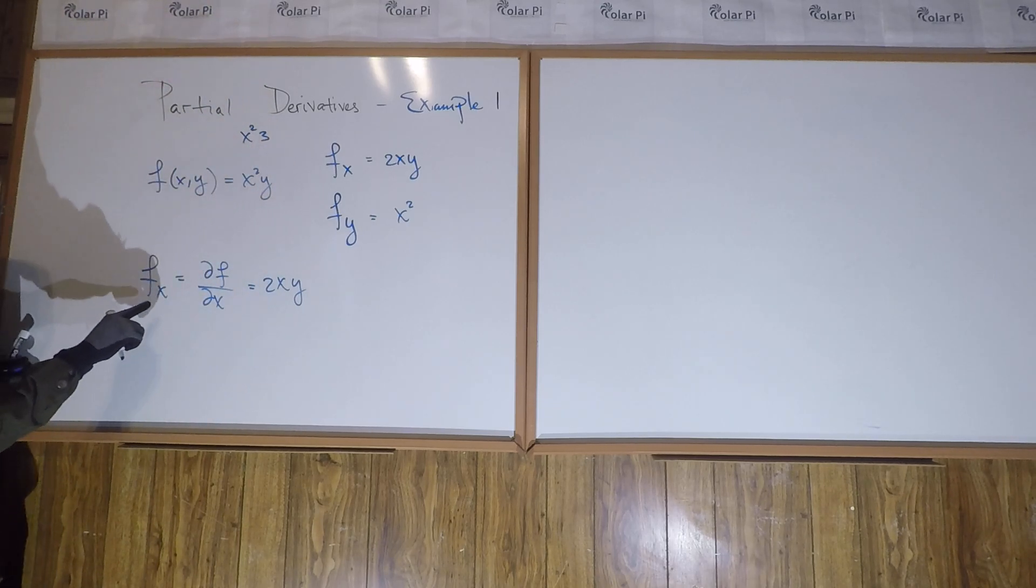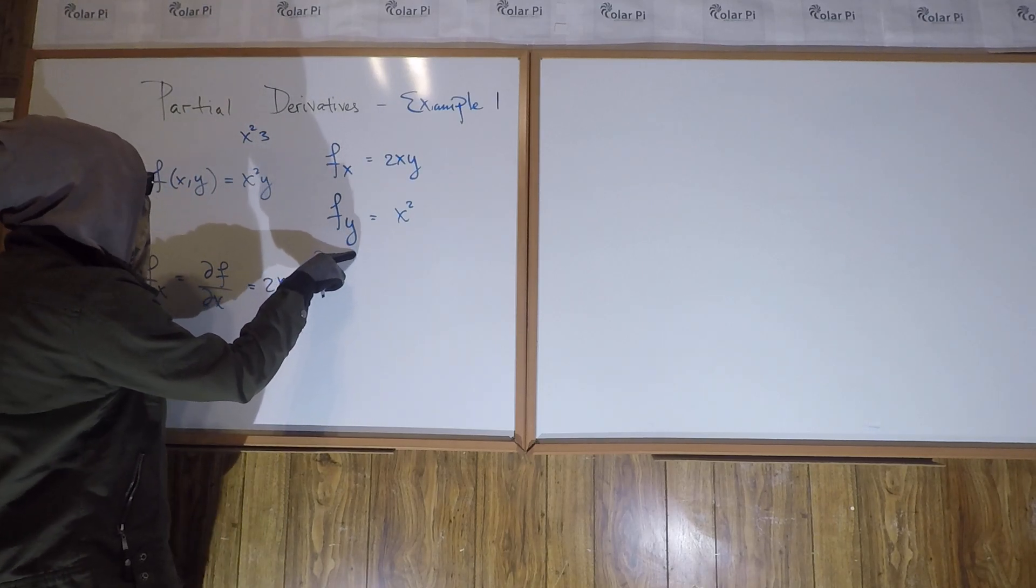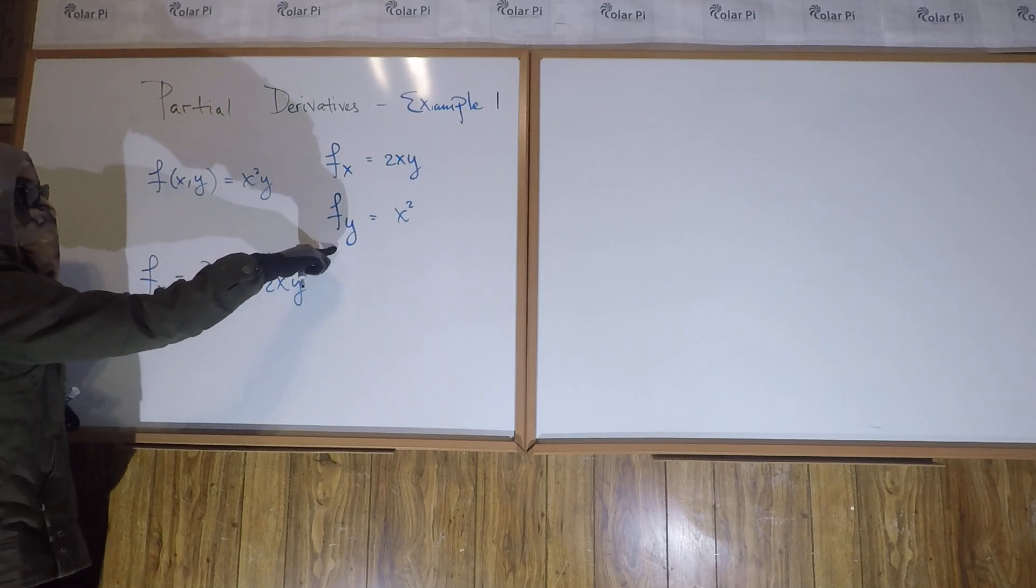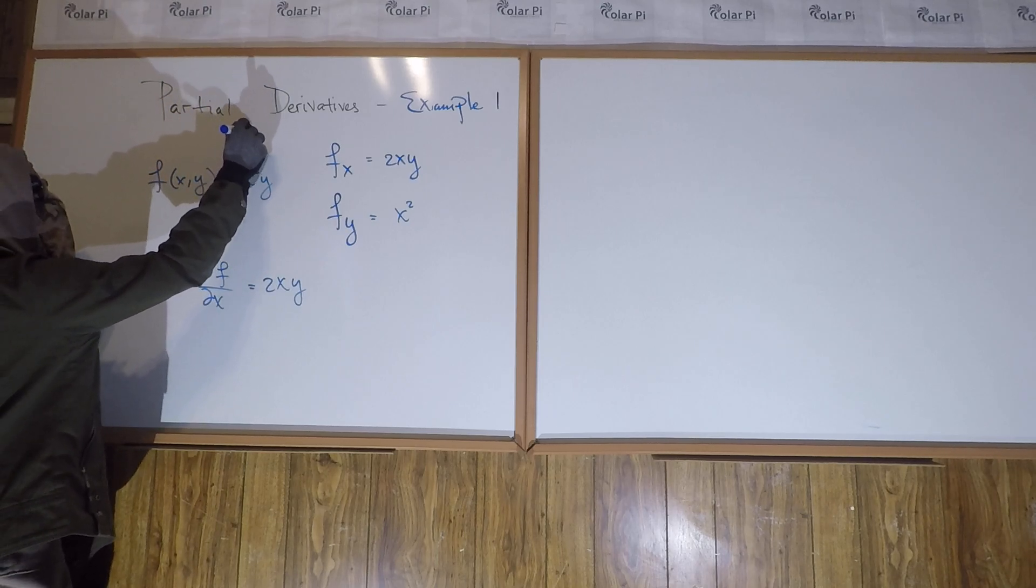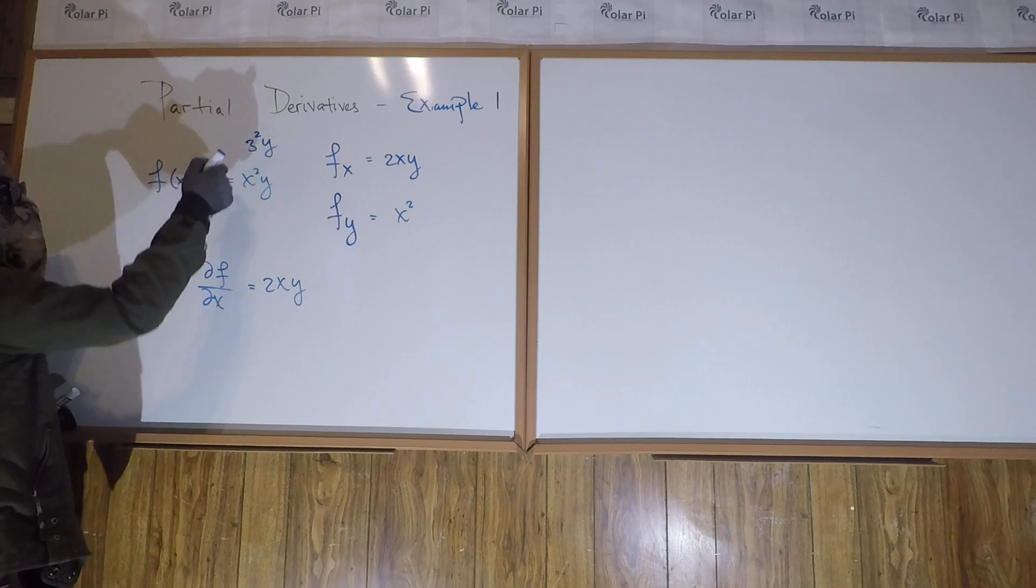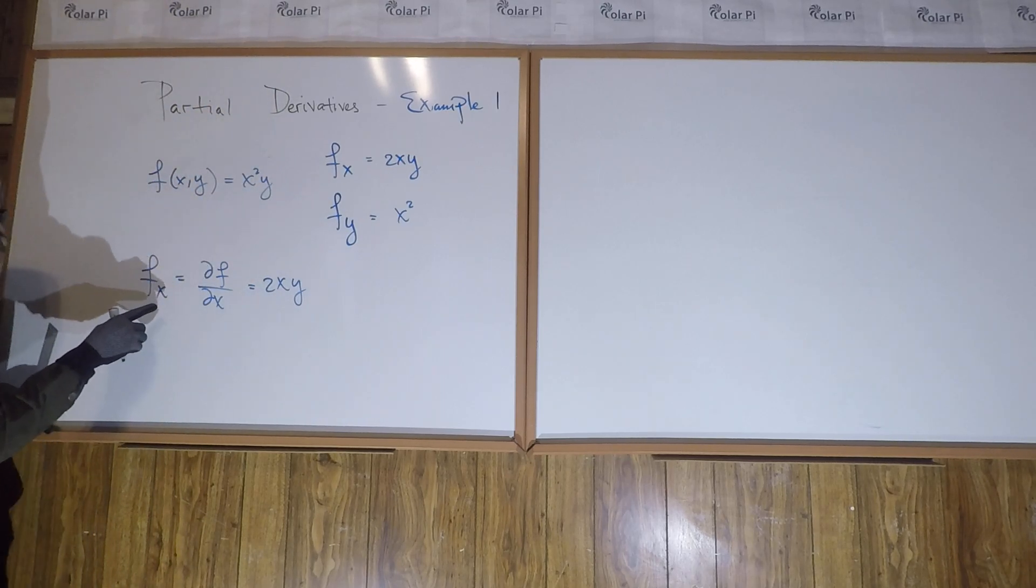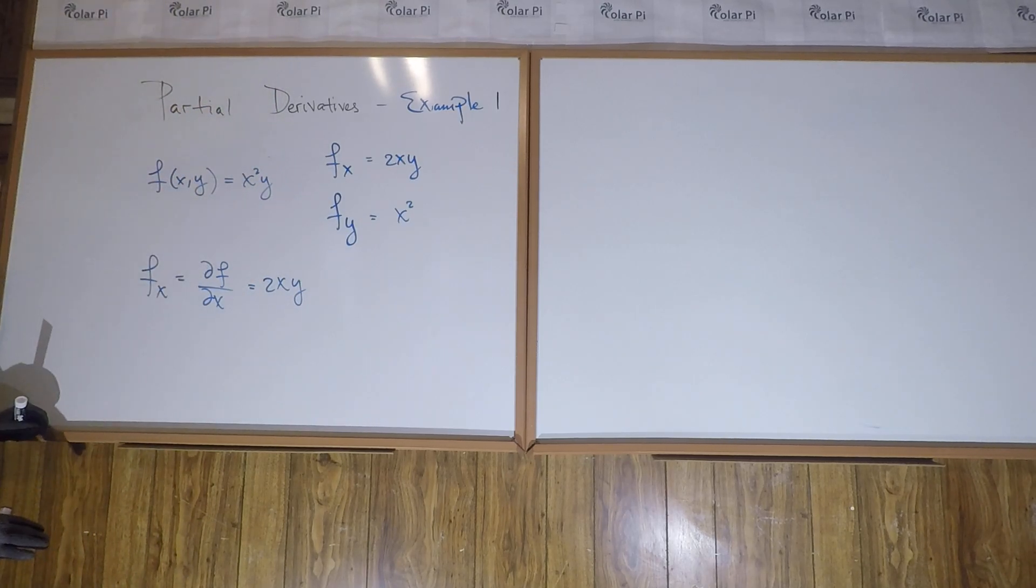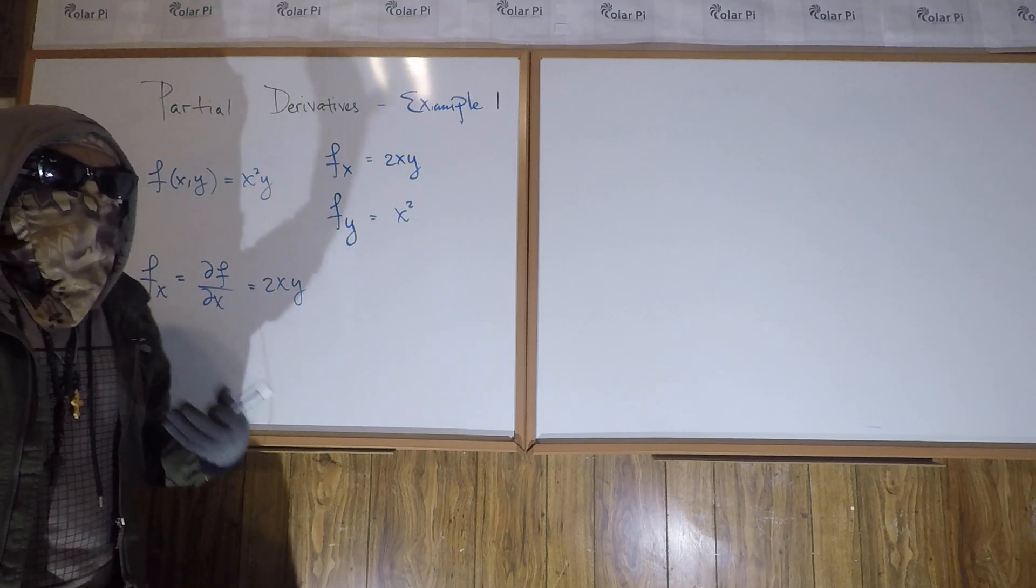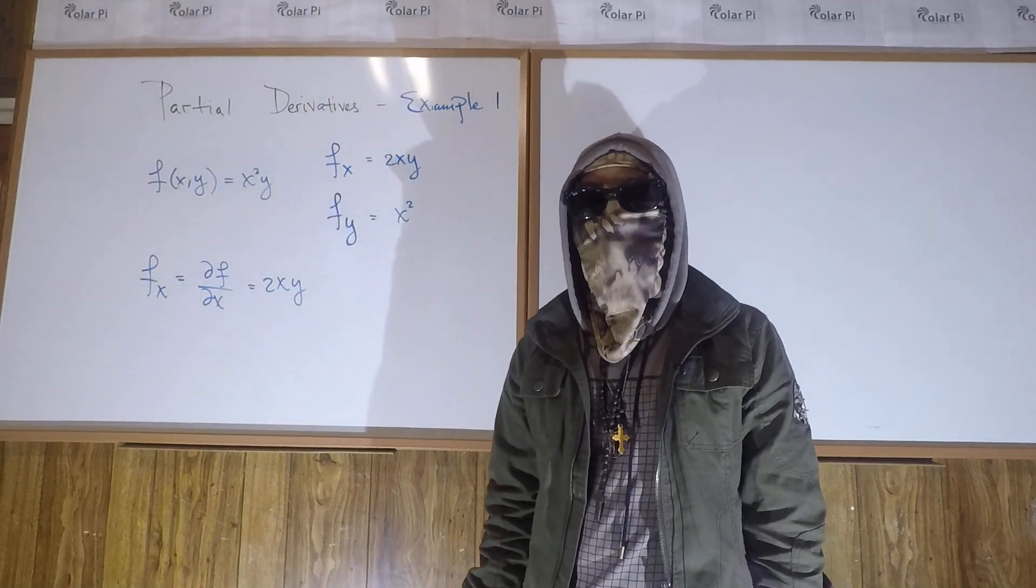On the other hand, when you're taking the partial with respect to y, the x is like a constant. So for the partial with respect to y, it's as if this thing is like 3 squared times y. Well, the derivative of 3 squared times y with respect to y is just 3 squared, and that's why you got just x squared. So again, partial with respect to x, treat all other variables as constants. Partial with respect to y, treat all other variables that are not y as constants.